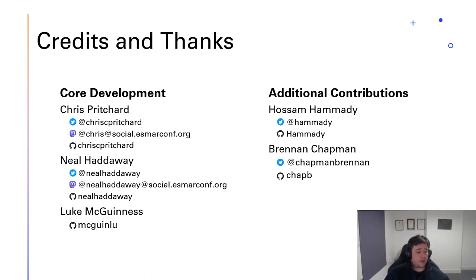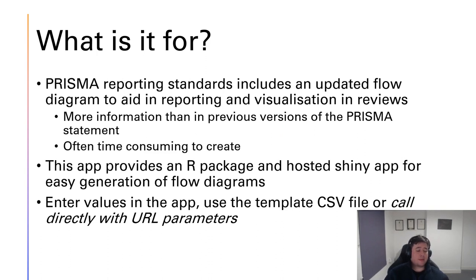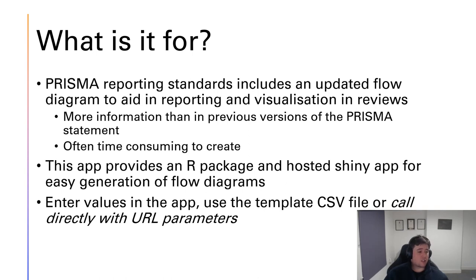So what is the app for? The PRISMA reporting standards were updated in 2020, and within that updated set of standards there was an updated flow diagram to aid in the reporting and visualisation of reviews. I think they're really important in making it clear where articles were identified and at which stage in the process they were excluded or reached inclusion. The reporting standards in their update contain a bit more information than in previous versions, making the flow diagram more complex. Even before the 2020 update they could be quite time consuming to create — no one's idea of fun is moving text boxes in a word processor, but that was often the quite fiddly work required.